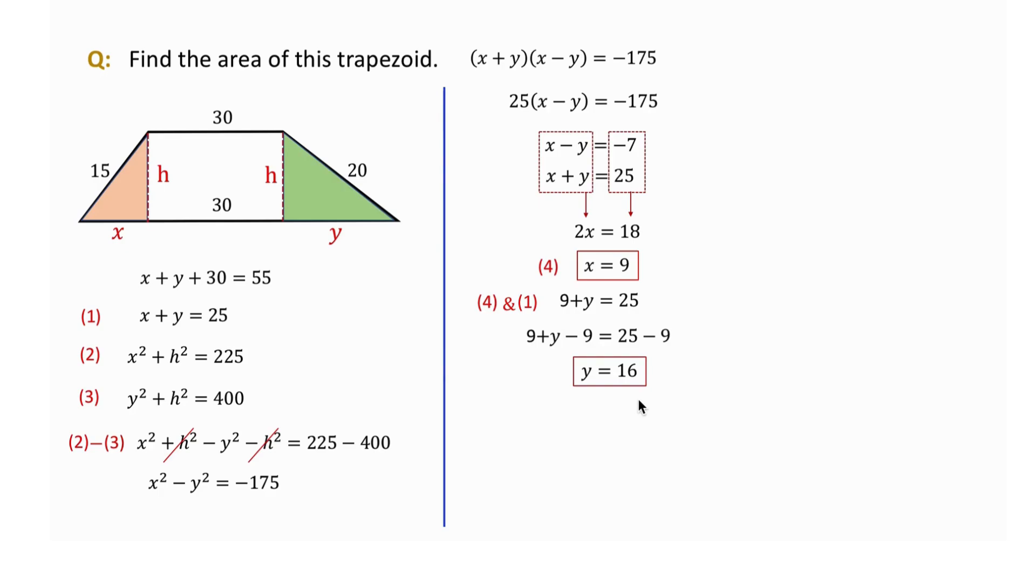Now to find h, we substitute 9 for x in equation 2. Subtracting 81 from both sides, we get h equals 12.